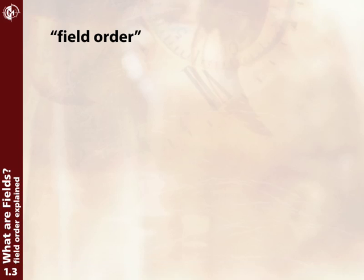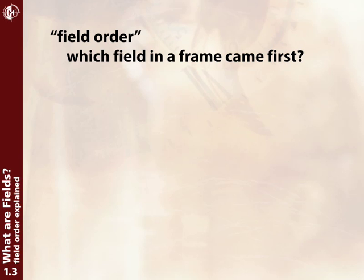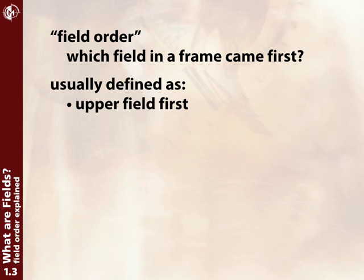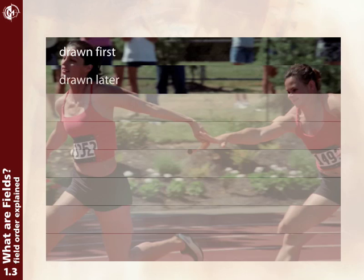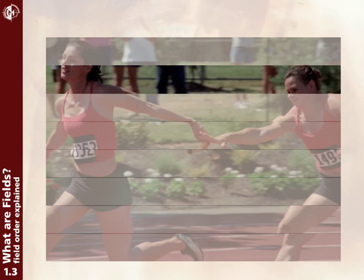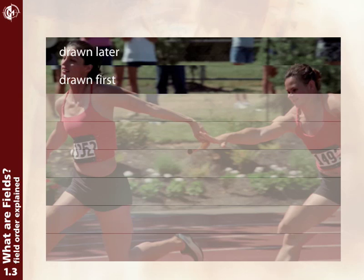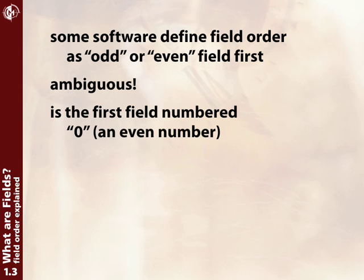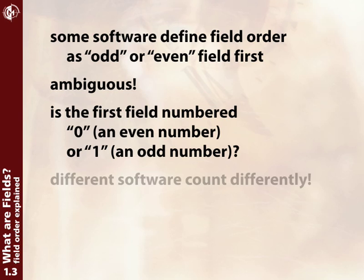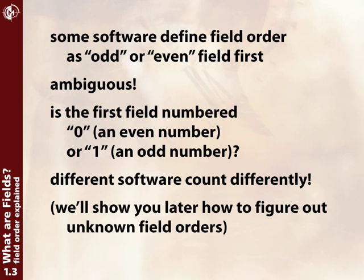The next most important concept is field order — which field in a frame came first in time. We usually define those in terms of upper field first or lower field first. If the very first line came from the earlier point in time, and the next line below it came from a later point in time, that video would be called upper field first. On the other hand, if the second line came first in time and then the top line came a little bit later, that would be called lower field first video. Some systems use the terms odd and even to refer to field order, but that's quite ambiguous because you don't know if that first field is numbered zero or one. Different software, even from the same manufacturer, can interchange whether even or odd means upper or lower.